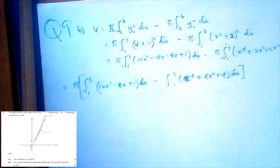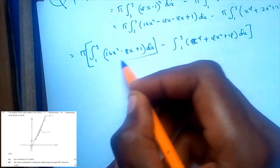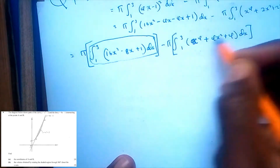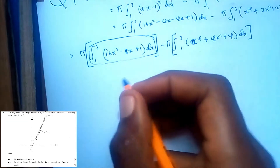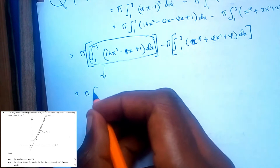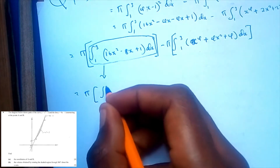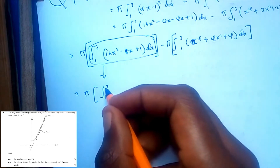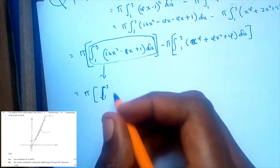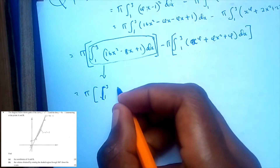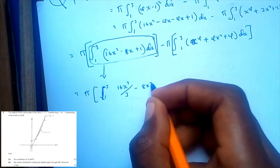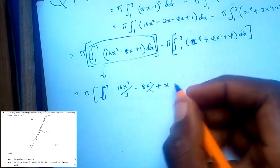Let's start by solving the first part. Integrating 16x squared minus 8x plus 1 gives 16x cubed over 3 minus 8x squared over 2 plus x, which simplifies to 16x cubed over 3 minus 4x squared plus x.